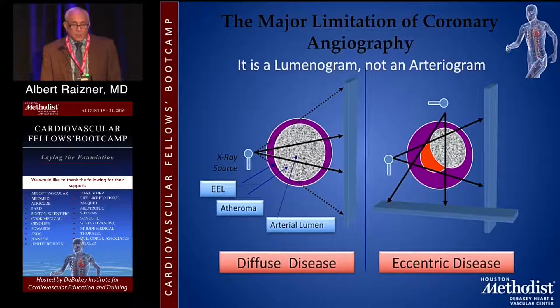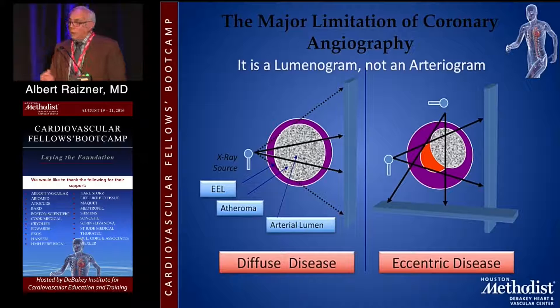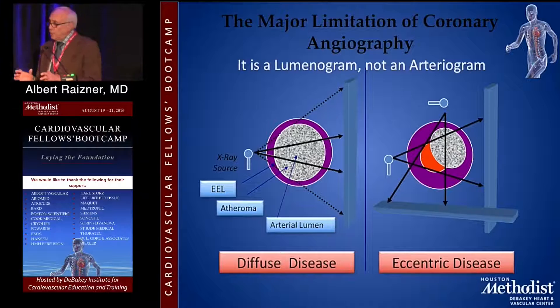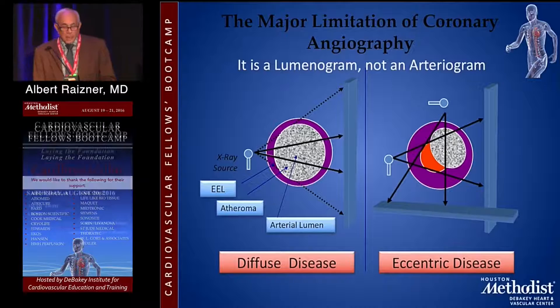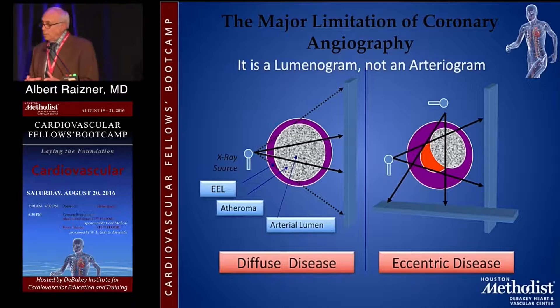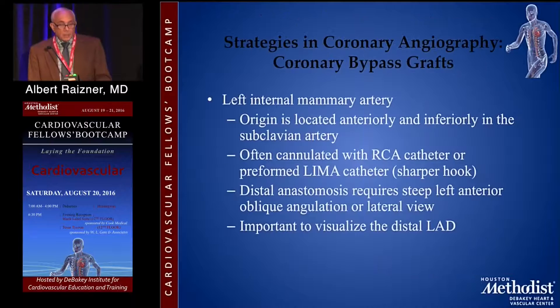The other problem is eccentric lesions, as shown in the right-hand panel. This shows two views looking at a very severe but eccentric lesion. These two views are orthogonal — 90 degrees apart — and we sometimes think that orthogonal views will allow us to decipher eccentric disease. But in this case, those two orthogonal views show a fairly good-sized lumen. If you take a view in between those two, you would see a stenotic lumen. So be cautious about eccentric lesions, and obtaining multiple views is the way around that trap.